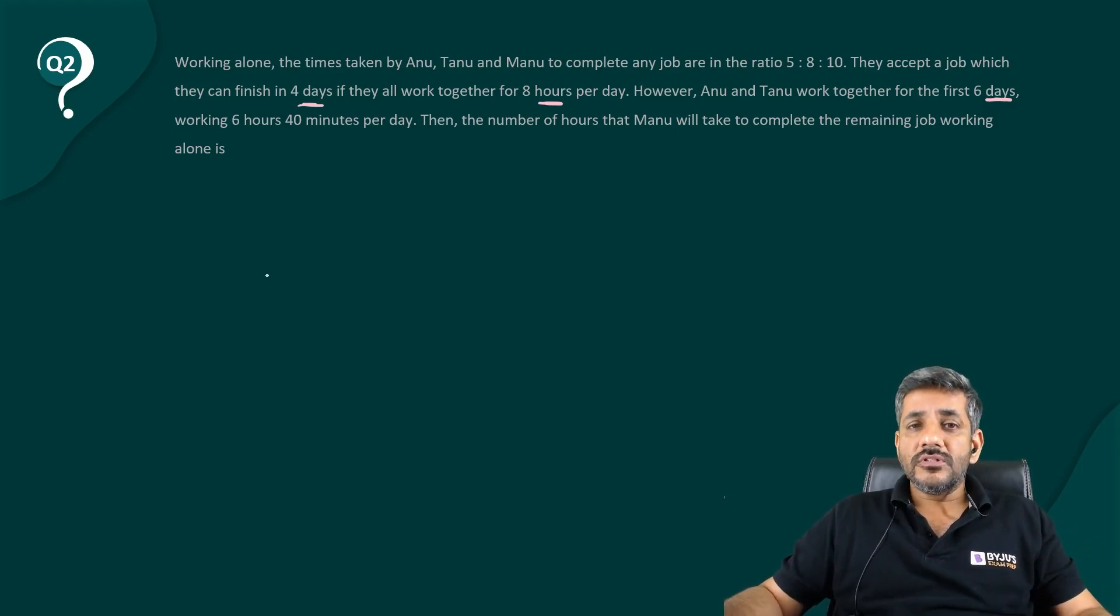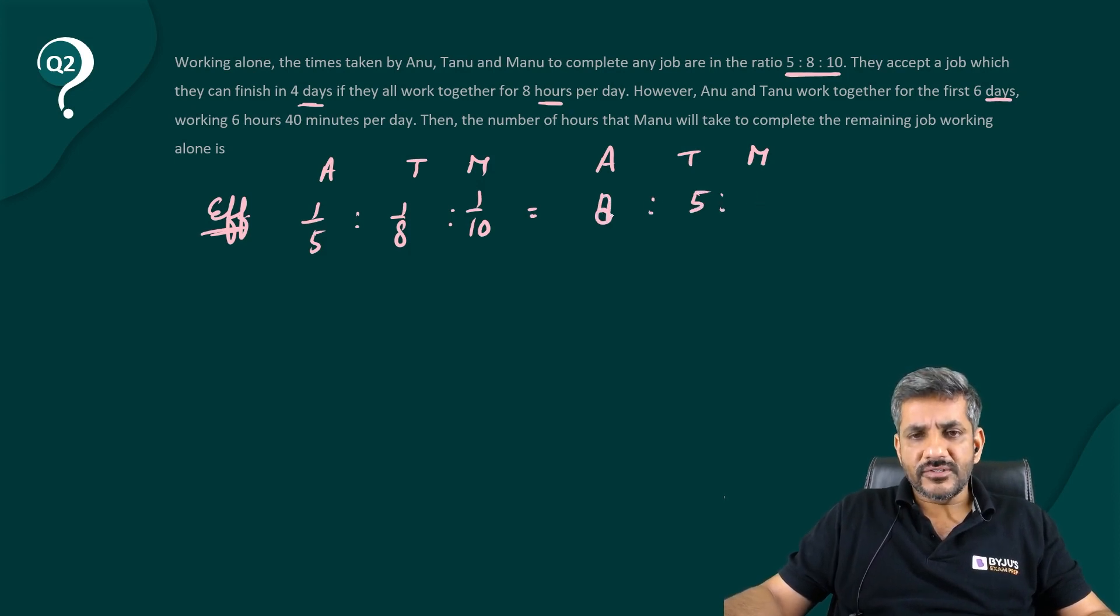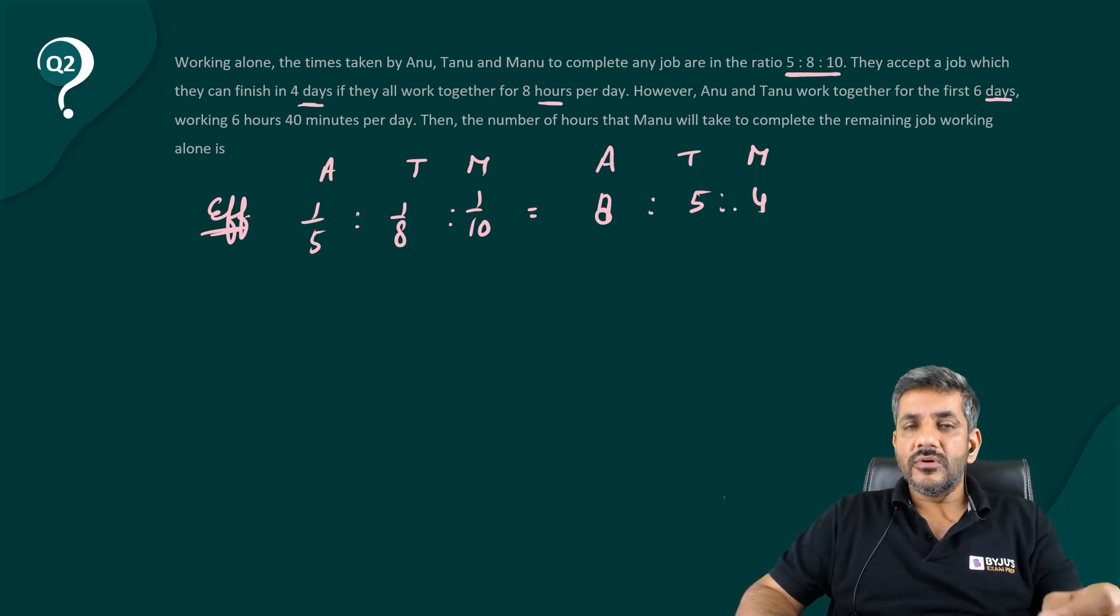So here, Anu, Tanu and Manu, the time taken by them is in a ratio of 5 is to 8 is to 10. So I can say their efficiencies are in a ratio of 1 by 5 is to 1 by 8 is to 1 by 10. I am sure all of you know this, the ratio of efficiencies is inverse of the time. So if I just multiply this whole by 40, I can say the ratio of their efficiencies are 8 is to 5 is to 4. That means, if Anu can make 8 units in a day, Tanu can make 5 units in a day and Manu can make 4 units in a day.